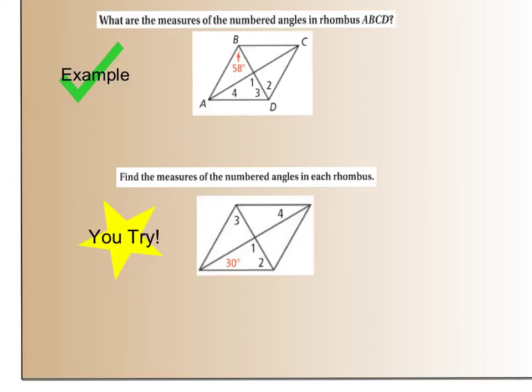So here we're looking at a couple of problems. The first one says, what are the measures of the numbered angles in rhombus ABCD? So these angles, one, two, three, and four, they want you to find what the actual measures are in degrees. I'm thinking about those two theorems that we just learned. I recognize right away that I have a rhombus, which means that my diagonals intersect perpendicularly, which means angle one must equal 90 degrees, because that is where my two diagonals intersect.